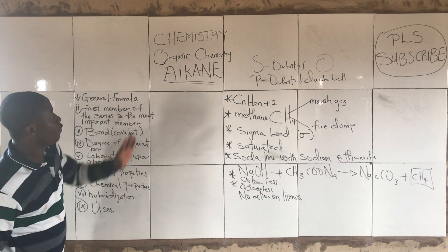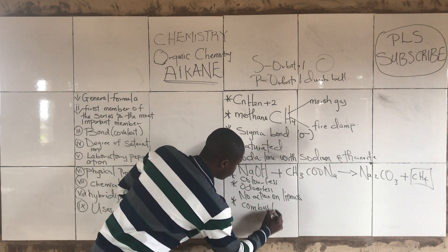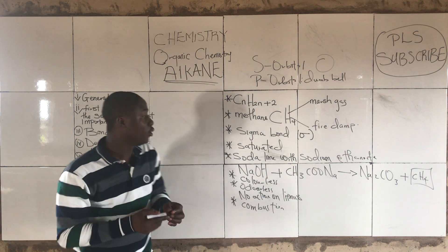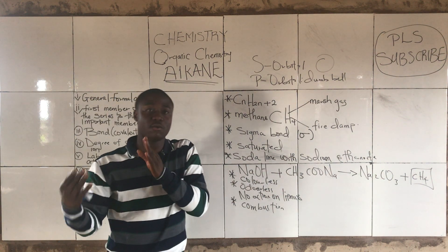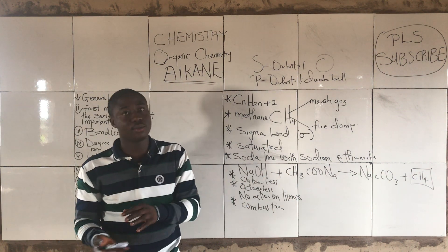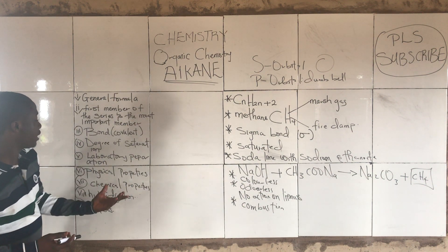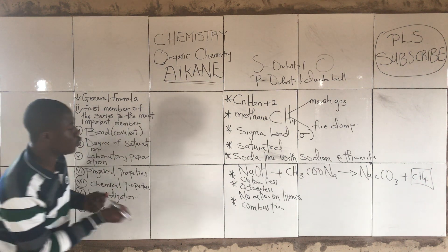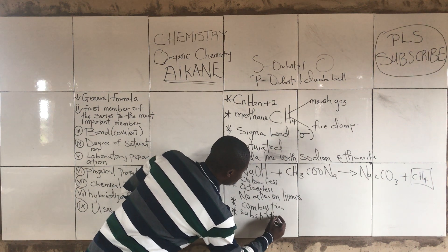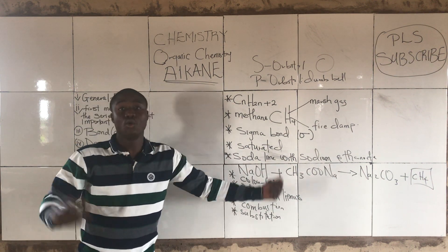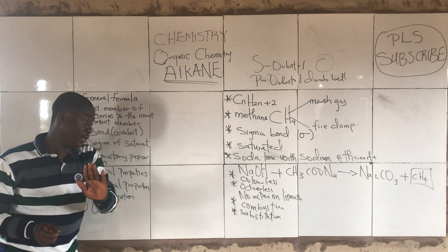Talking about the chemical properties of alkanes, they undergo combustion — reacting with oxygen. We have complete and partial combustion reactions. Alkanes can also undergo substitution reaction, for example chlorination. Chlorination is a very popular reaction of alkanes.